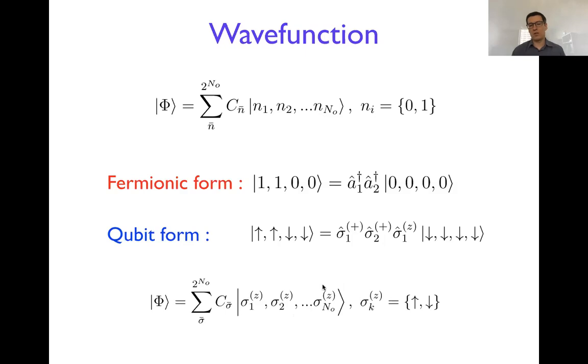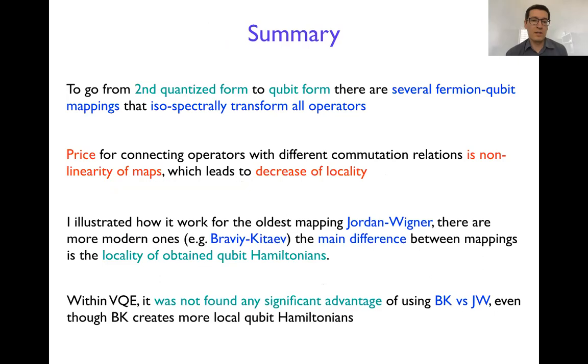I would like to summarize that going from the second quantized form to qubit form can be done through several fermion-qubit mappings that allow you to do transformation isospectrally, which means you don't change the spectrum of the operators, which is great. And the price though for those transformations usually is that the mappings are non-linear and that decreases locality of the operators.